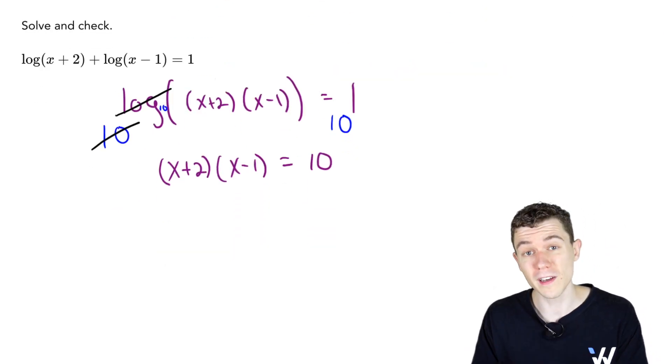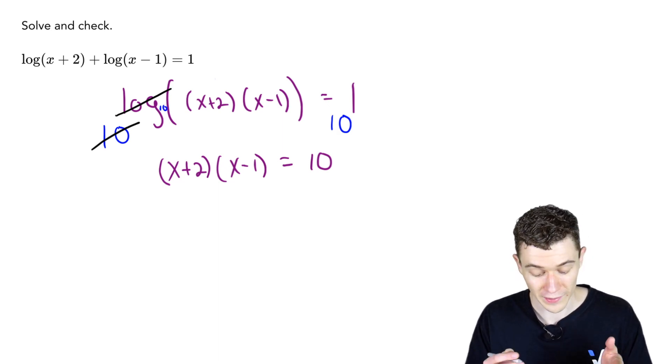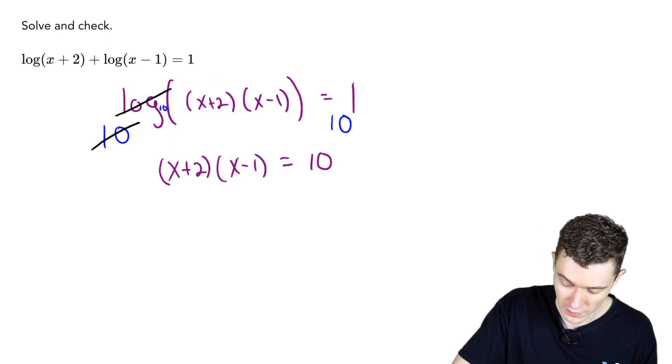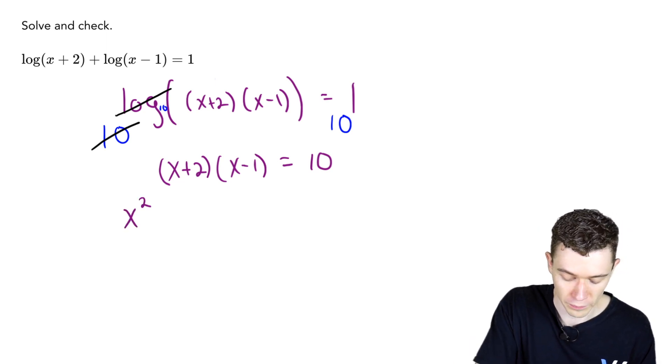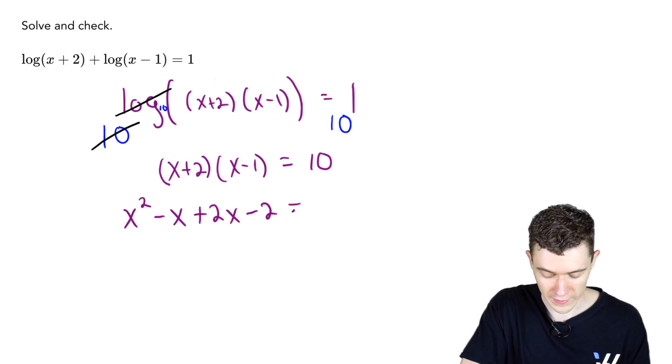We've reduced our logarithmic equation to a quadratic equation, which we know how to solve. Let's distribute everything on the left. If we do that, x times x is x squared, x times minus 1 is minus x, 2 times x is 2x, 2 times minus 1 is minus 2. This equals 10.